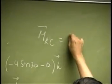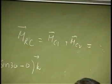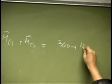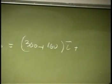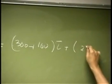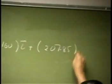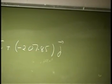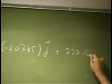Which is the resultant couple MRC being MC1 plus MC2, so you're looking at the 300 plus 160 times I. Then you have, let's say, 207.85, that times J, except it has a negative magnitude, then we got this plus 277.13k.